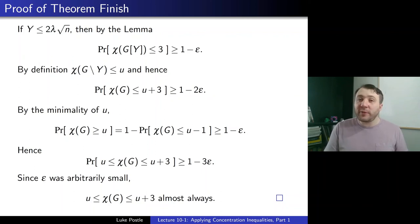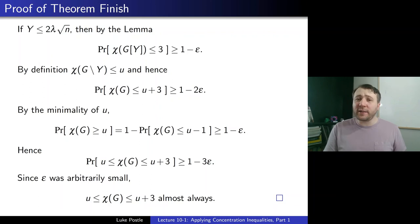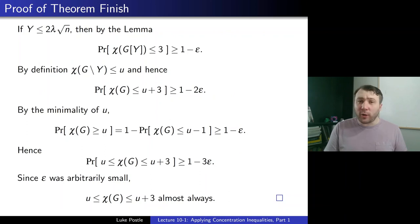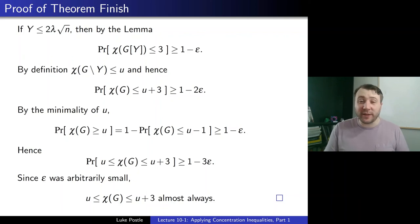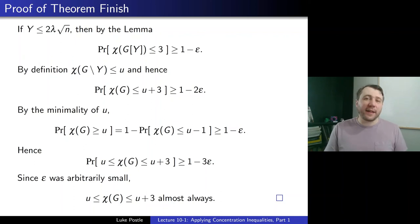Since ε was arbitrarily small, u ≤ χ(G) ≤ u + 3 almost always — concentrated on four values. So the proof of the main theorem is complete. The key ideas were: using the vertex exposure martingale to get O(√n log n) concentration for any p, passing to the auxiliary variable Y and applying Azuma's to show Y is small, and then using the lemma that small sets are almost always 3-colorable. Next time we'll continue with part two of applying concentration inequalities. Until next time!